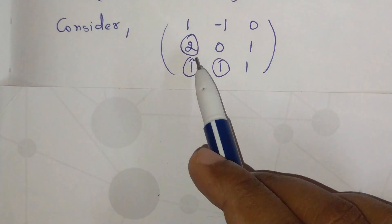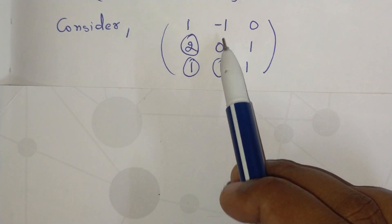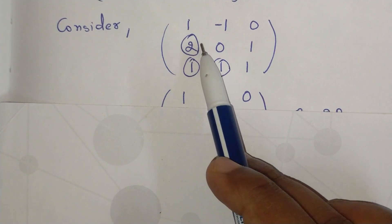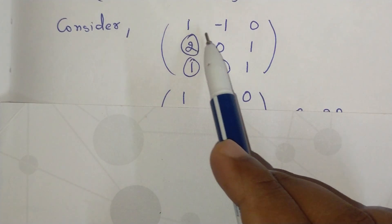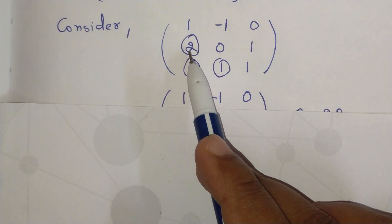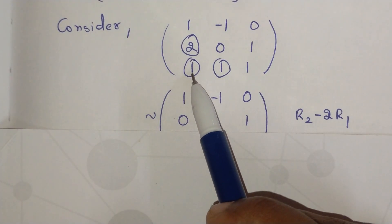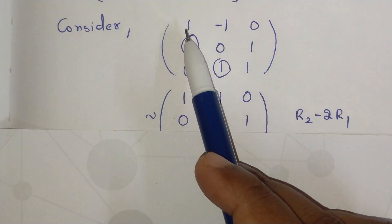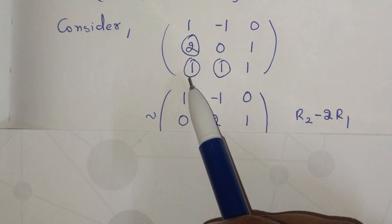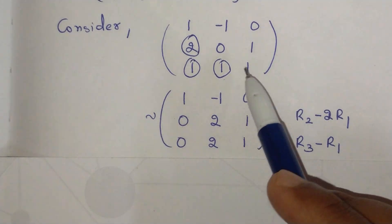To make the element in position (2,1) equal to 0: we have 2 in row 2 and 1 in row 1, so we apply R2 → R2 − 2×R1. For row 3, we apply R3 → R3 − R1, giving (1−1, 1−(−1), 1−0) = (0, 2, 1).